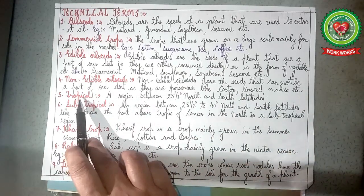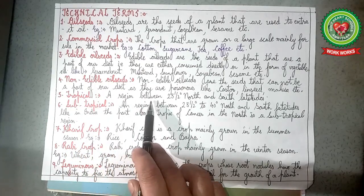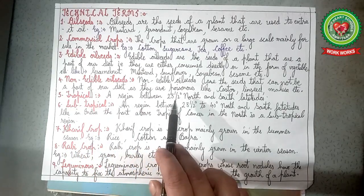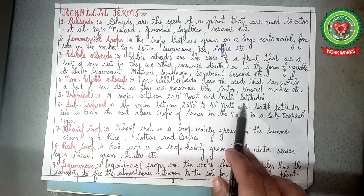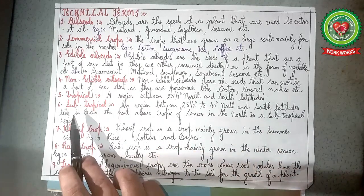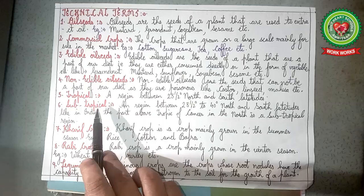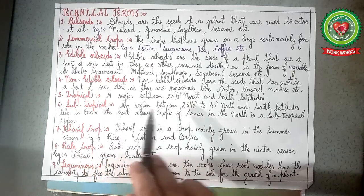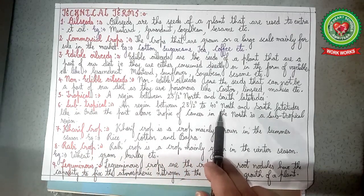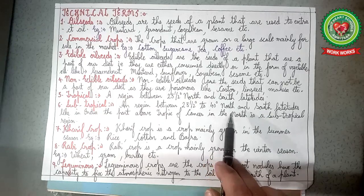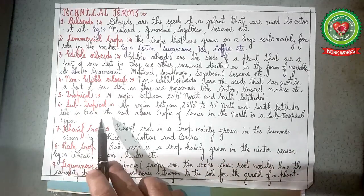Number 5, tropical: a region between 23.5 degrees north and south latitudes. Number 6, subtropical: refers to the region between 23.5 degrees to 40 degrees north and south latitudes — like in India, the part above the Tropic of Cancer in the north is a subtropical region.